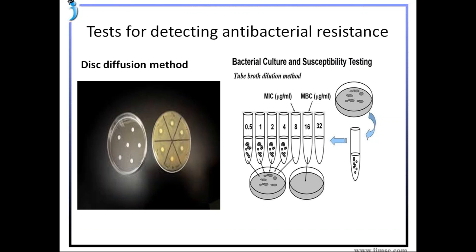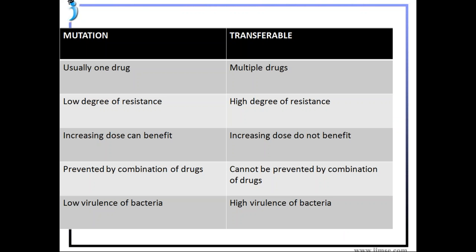We have discussed the various mechanisms and mutational changes that bacteria develop to acquire resistance. To identify antibiotic resistance in a routine laboratory, two methods are used: the disc diffusion method and the tube broth dilution method.